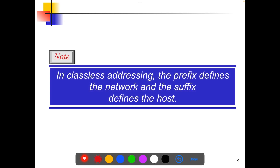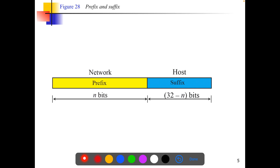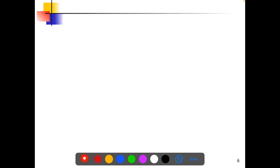In classless addressing, the prefix defines the network and the suffix defines the host. The prefix is n bits and the suffix is 32 minus n bits. For example, if the prefix is 16, the suffix is 16; if the prefix is 8, the suffix is 24; if the prefix is 24, the suffix is 8. This way we can generate the network and host portions.